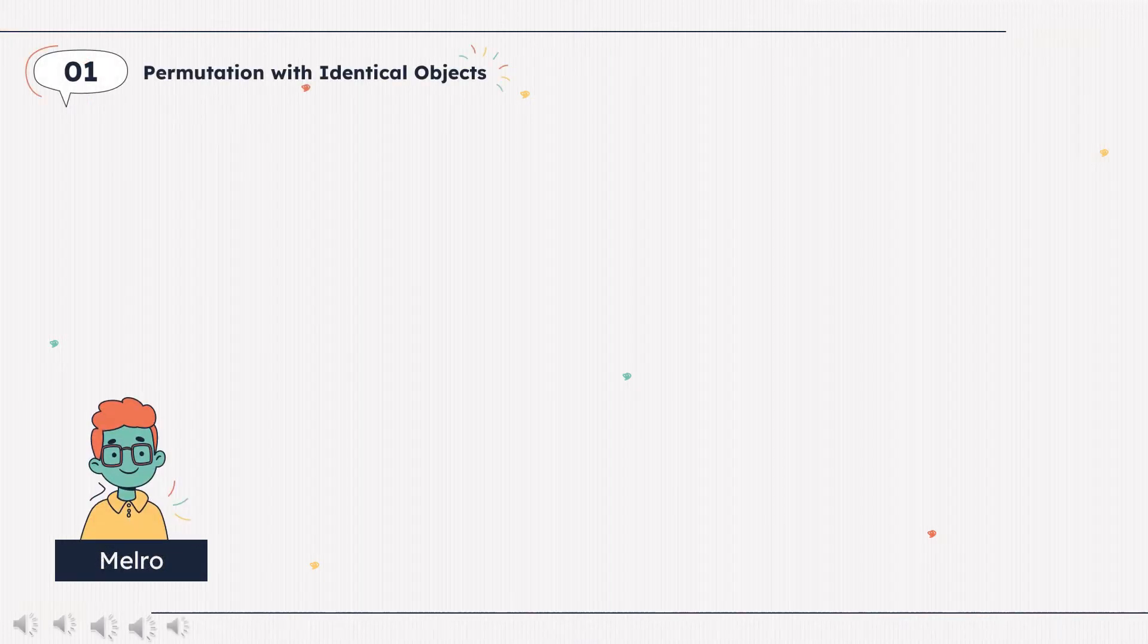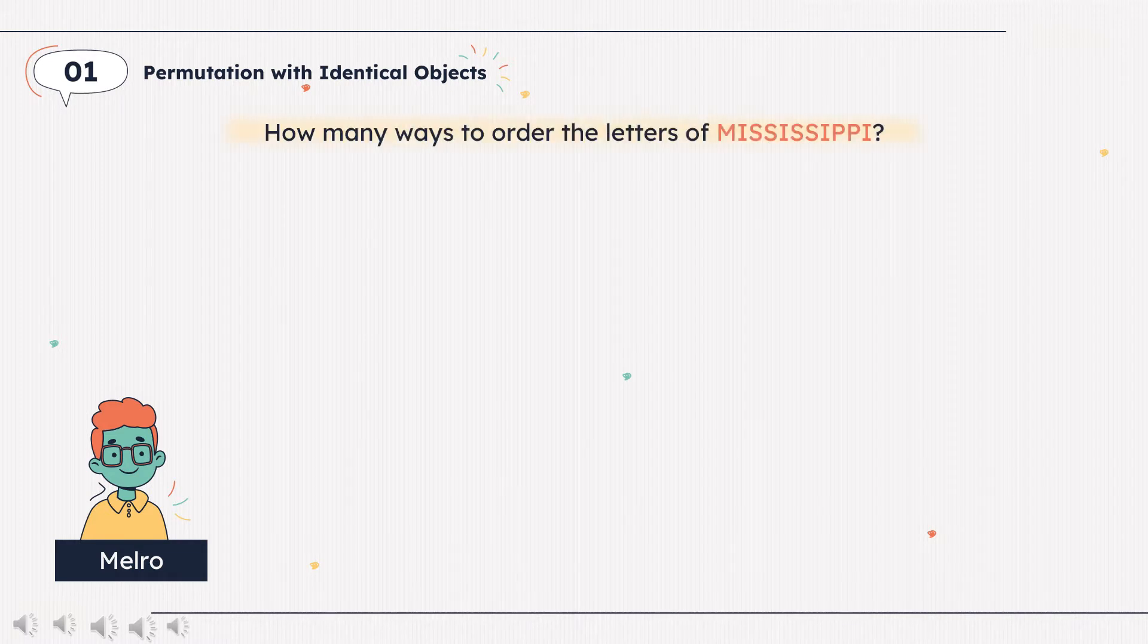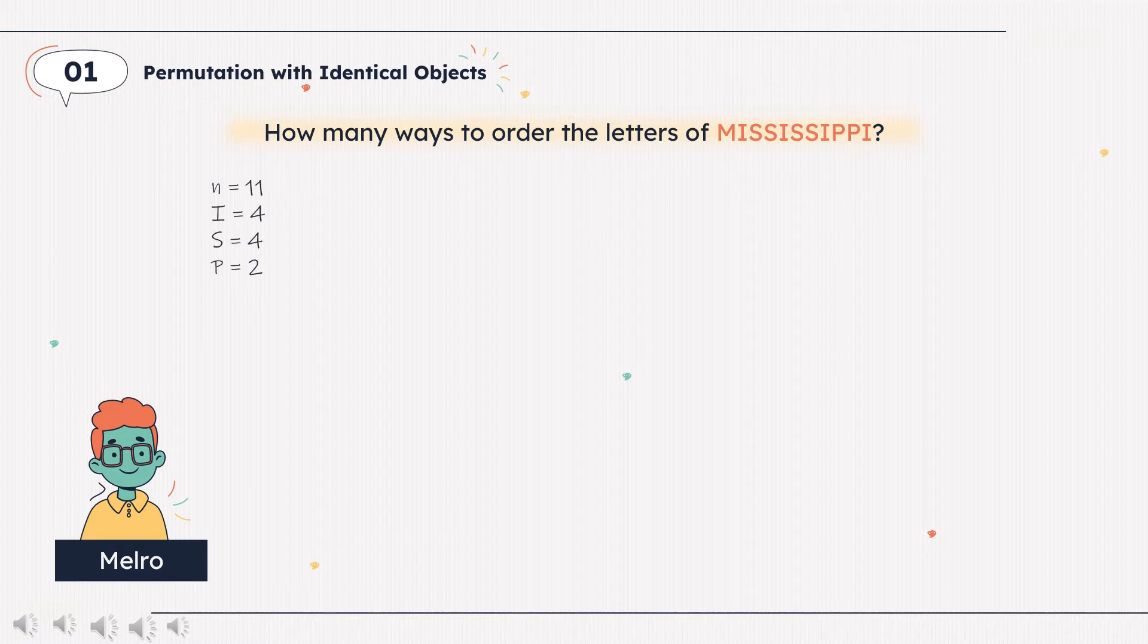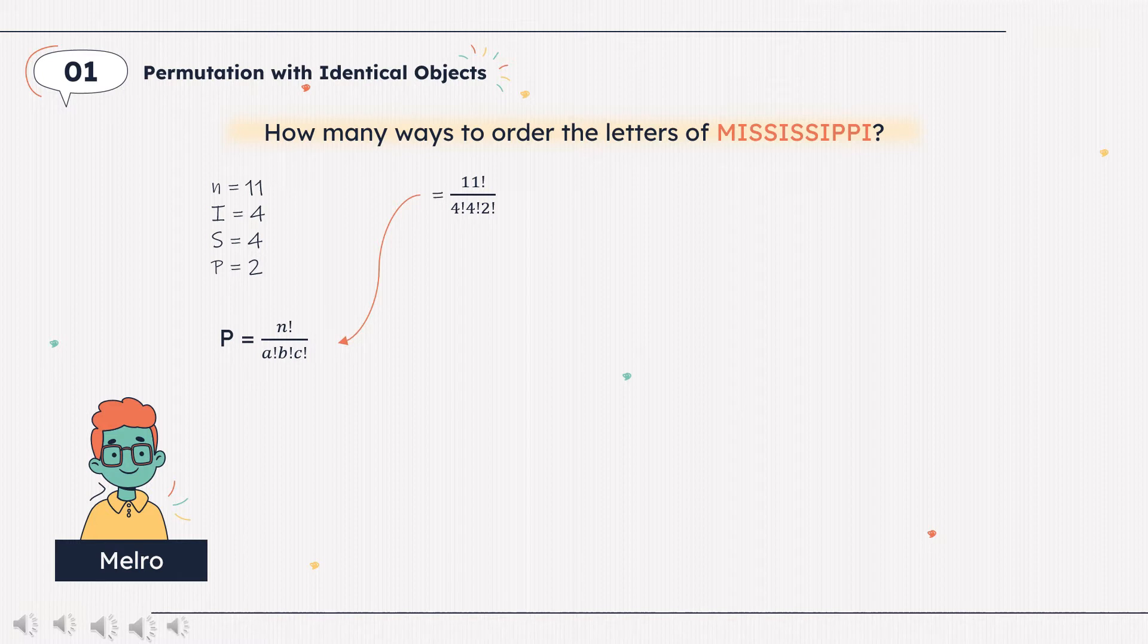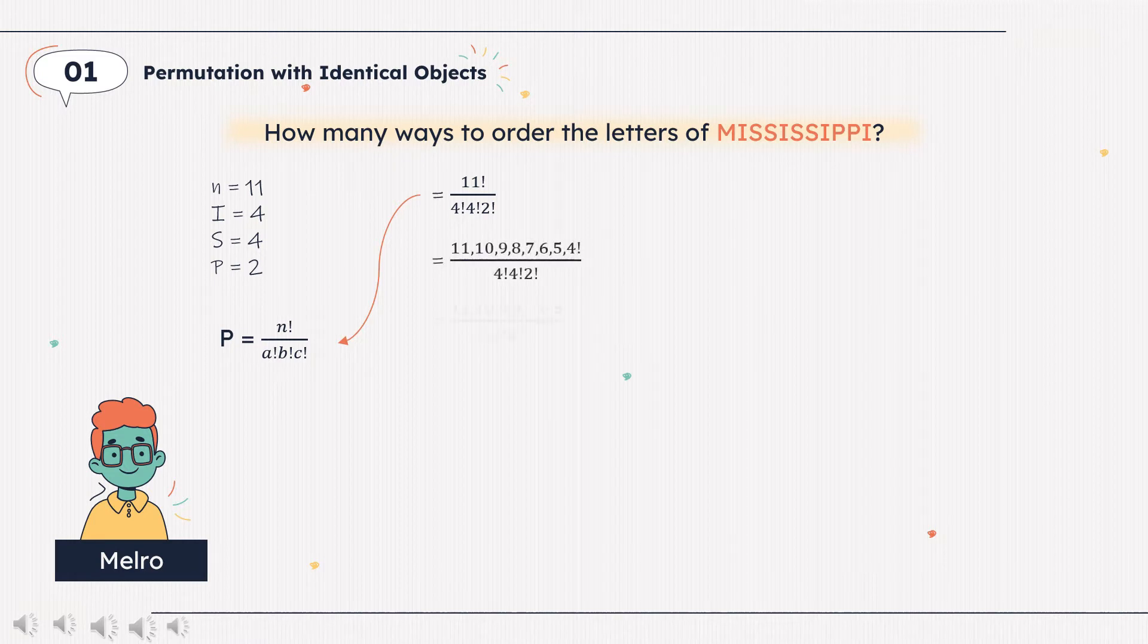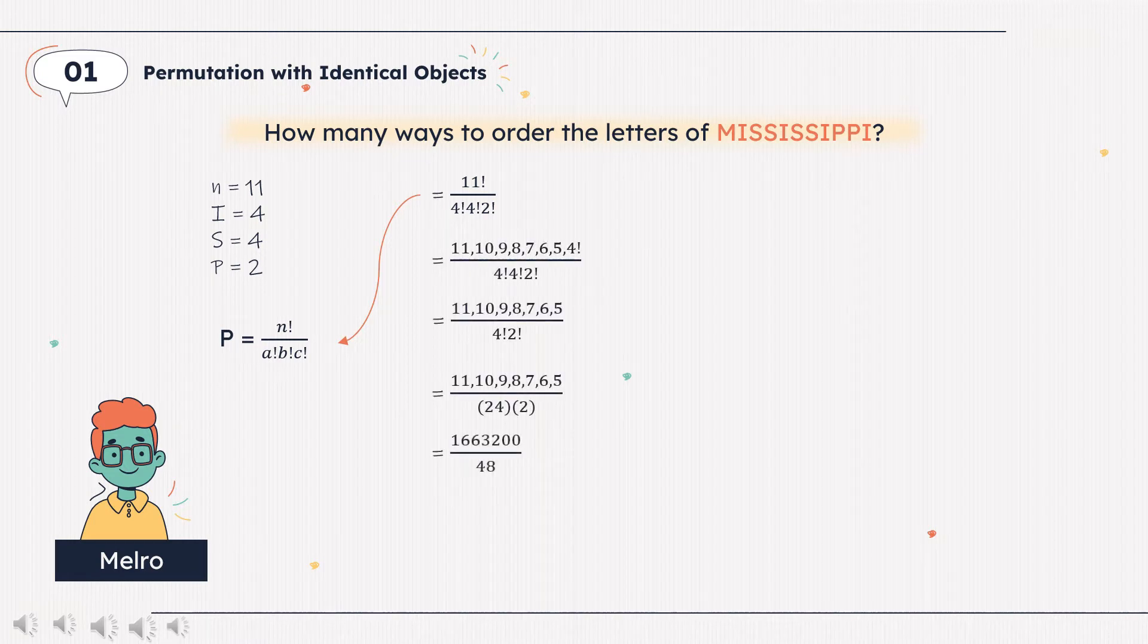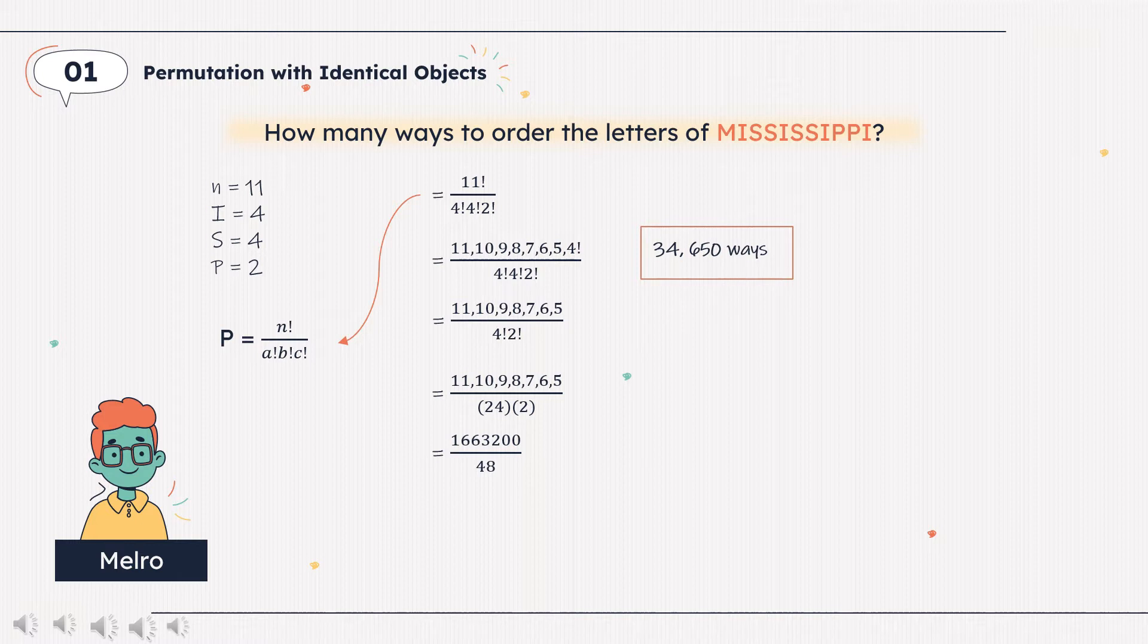Hello, I am Meloraine Jaime, and here is an example of permutation with identical objects. Example, how many ways to order the letters of Mississippi? There are 11 letters, but 4 i's, 4 s, 2 p's. There are 11 factorial over 4 factorial times 4 factorial times 2 factorial. It equals 34,650 ways.